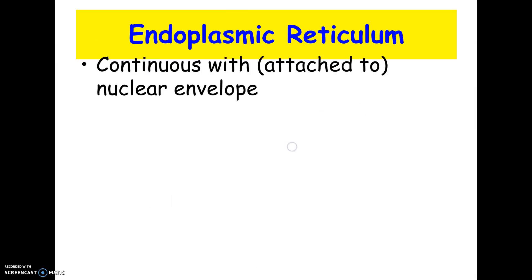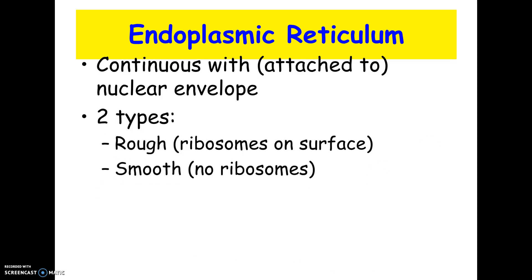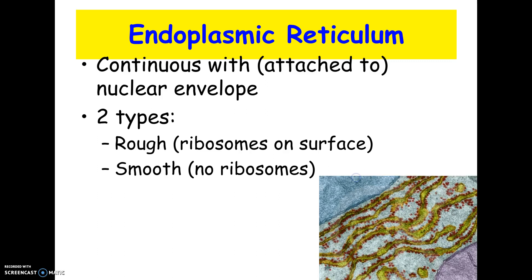The first part of the endomembrane system is the endoplasmic reticulum, or ER. The ER is literally attached to and continuous with the nuclear envelope. There are two kinds: the rough ER, which is easy to recognize because it's bumpy with ribosomes on it, and the smooth ER, which looks smooth and has no ribosomes. Under a transmission electron microscope you can see the ribosomes as red dots on the yellow endoplasmic reticulum.